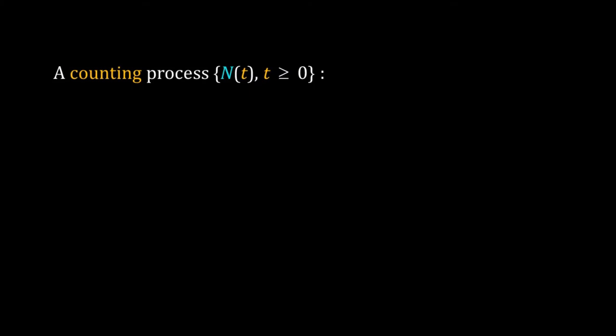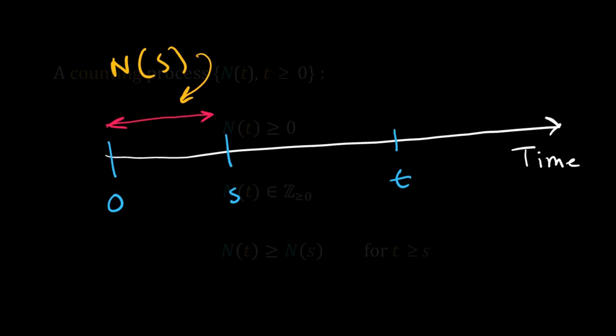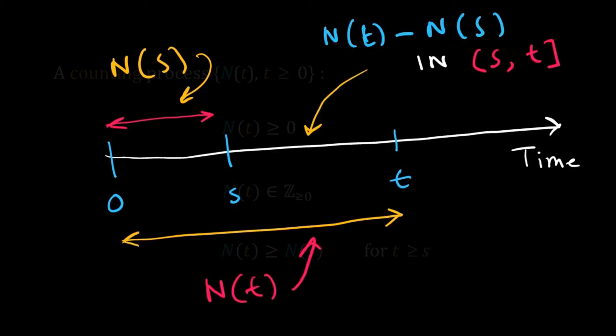First, a counting process. Suppose there is a stochastic process with discrete events happening over time, and we are counting how many such events have happened. This stochastic process will be called a counting process with count N(t) for t greater or equal to 0. Here the count is non-negative, so N(t) should always be greater or equal to 0. It is an integer, so N(t) could be 0, 1, 2, and so on. N(t) is non-decreasing, meaning N(t) should be greater or equal to N(s) where t is greater or equal to s. So N(t) minus N(s) is the count in the interval starting just after s up to t, including t.